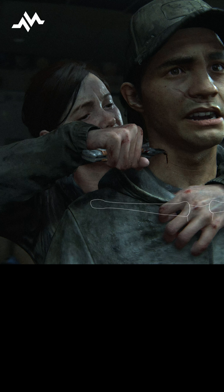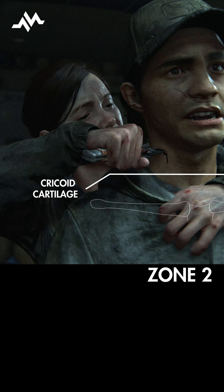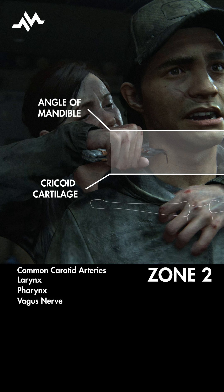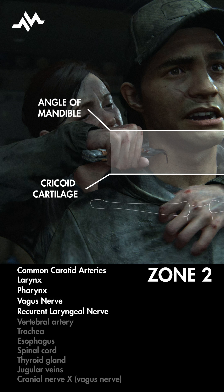The region of zone two continues cephalad, or upwards, from the cricoid cartilage to the angle of the mandible, and contains structures like the common carotid arteries, larynx and pharynx, the vagus and recurrent laryngeal nerves, plus all of these.